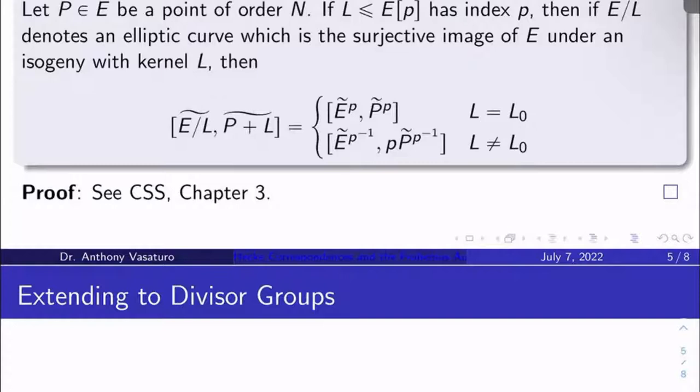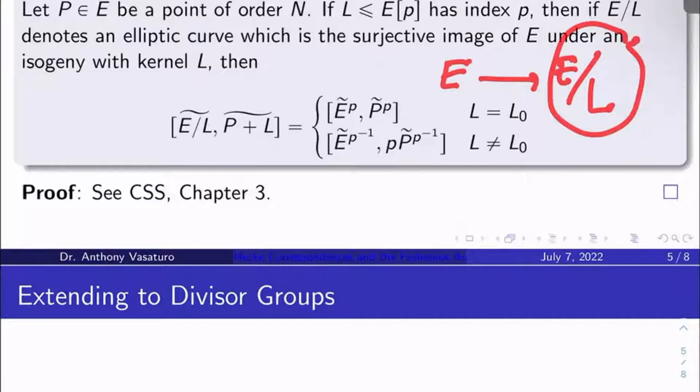In other words, if I take E and I look at its image under an isogeny that has a kernel which is of order p, can I describe enhanced elliptic curves of reductions of this guy in terms of enhanced elliptic curve classes having to do with this guy? That's what's going on here. Yes, you can.